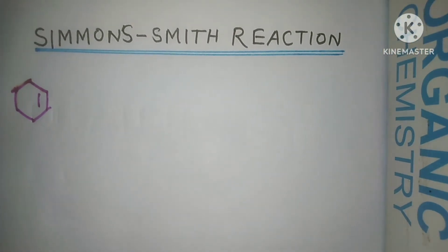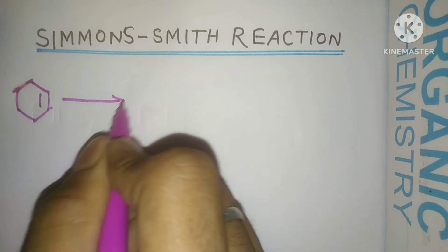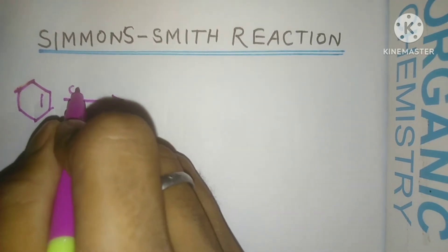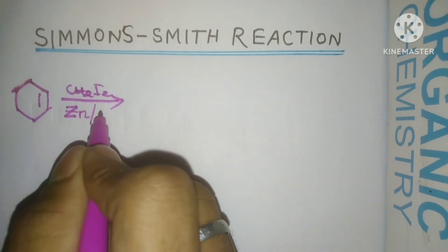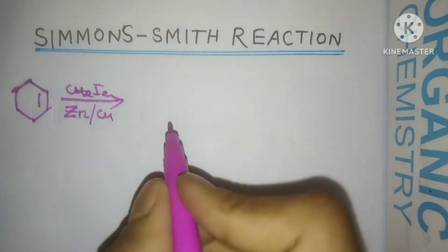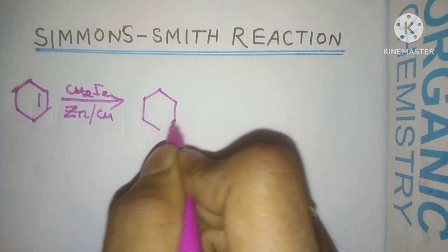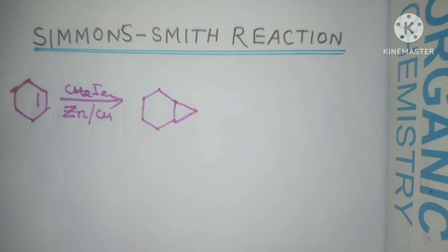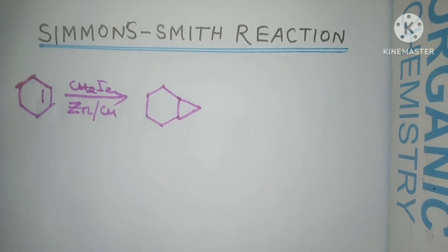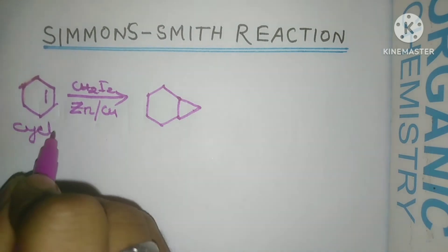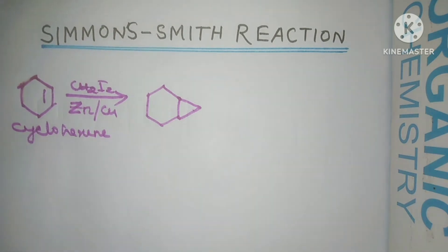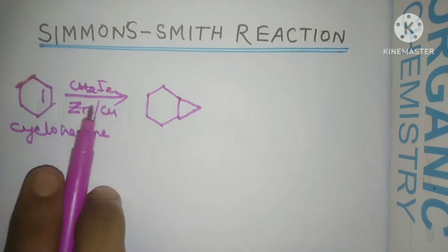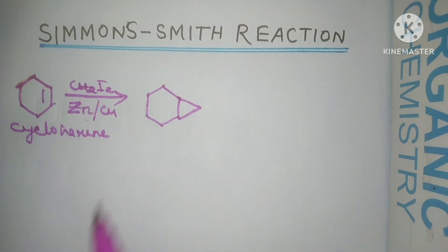This is our cyclohexene. On reacting with CH₂I₂ and zinc-copper couple, it forms a bicyclo compound. So cyclohexene reacting with CH₂I₂ and zinc-copper couple forms a bicyclic product.